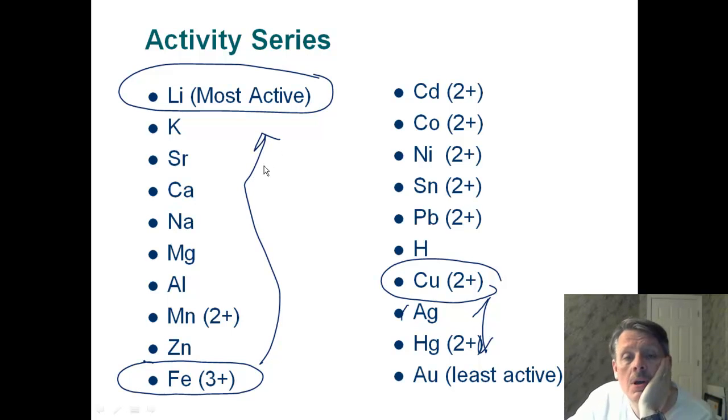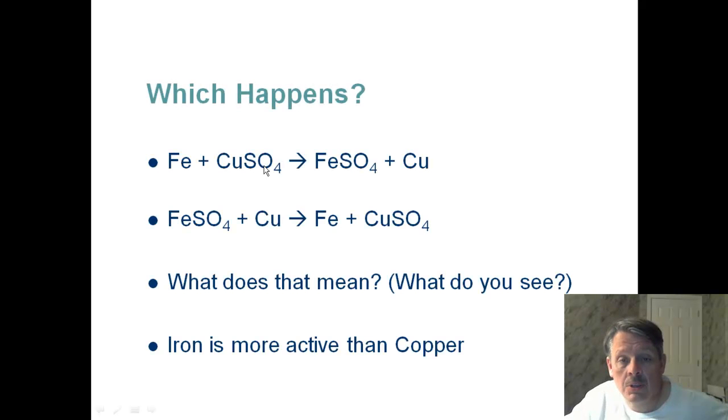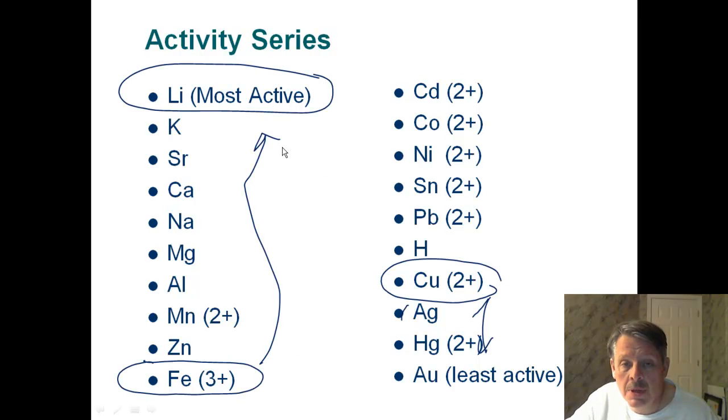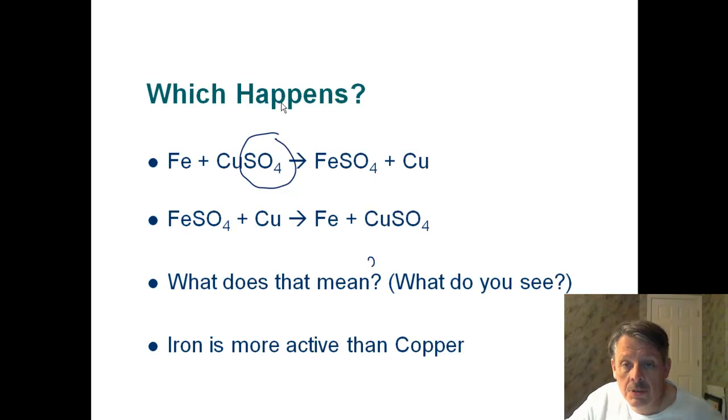So iron is the one that we would like to be with. So the sulfate ion is going to choose, and it would rather be with, well, we just said it would rather be with iron. So the sulfate ion wants to be with iron. So this is what would happen, and it would leave copper all alone.